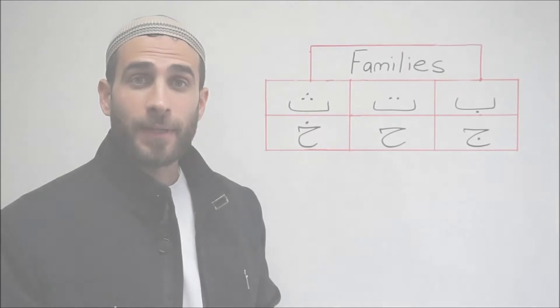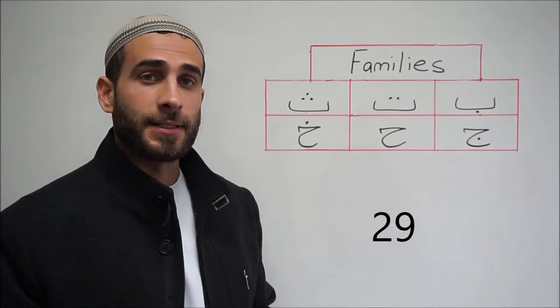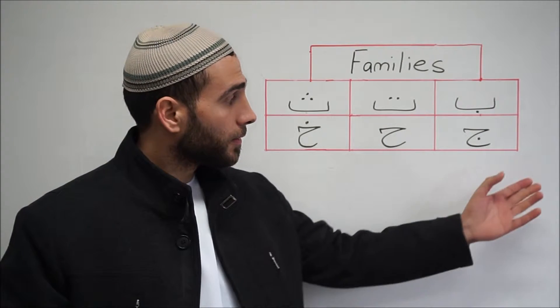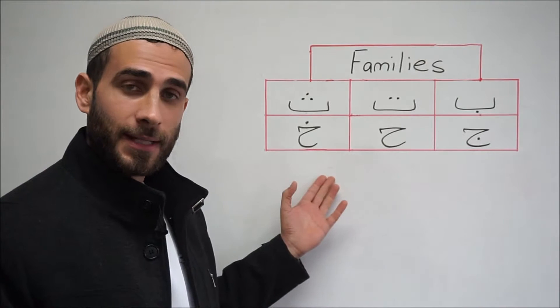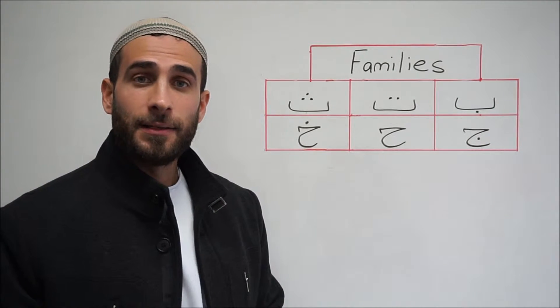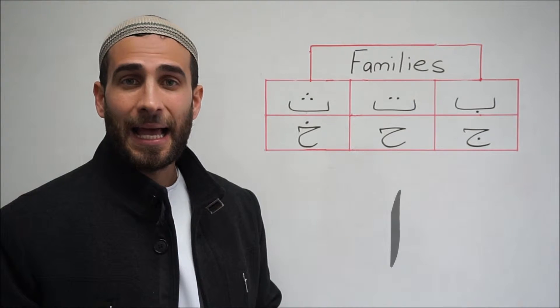In the Arabic alphabet there are 29 letters. Arabic is written from right to left. The first letter is Alif.